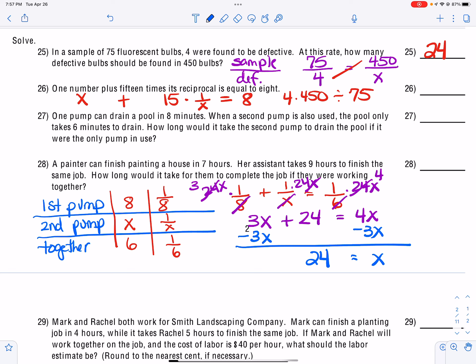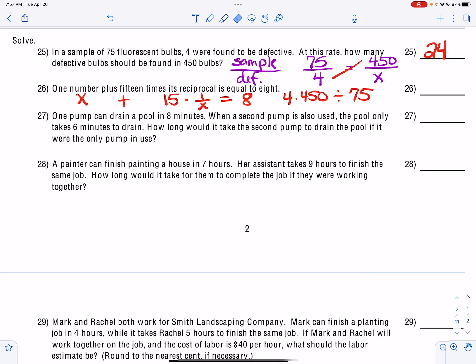Now the same idea is going to be for number 28, where we have the work problem where we're painting. They've got the painter, they've got the assistant, and they want to know how long it's going to take together. So again, this seems to be a nice spot to work these problems out. So I'm going to set up painter, and then we've got assistant, and then we've got together. So the first painter paints the house in 7 hours. Her assistant takes 9 hours. And we want to know how long it would take them together. So we are going to have them turned into unit fractions.